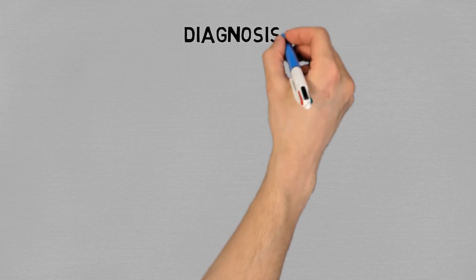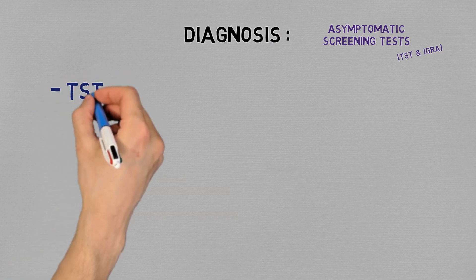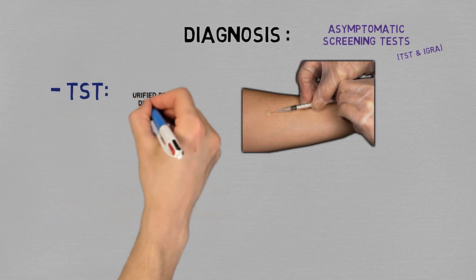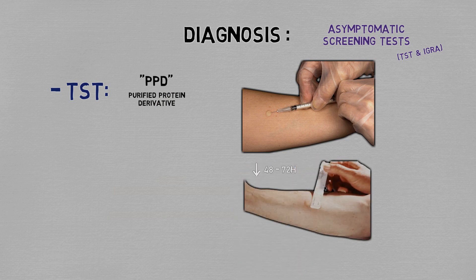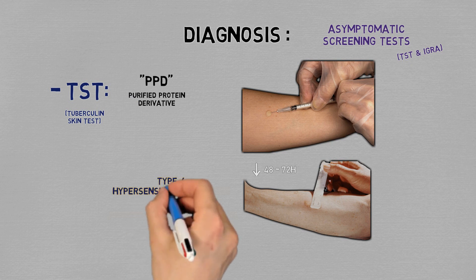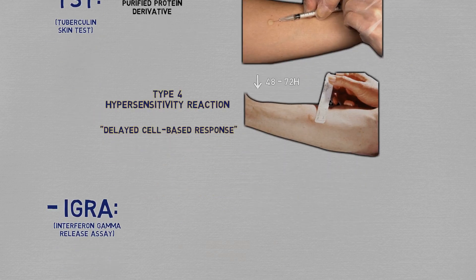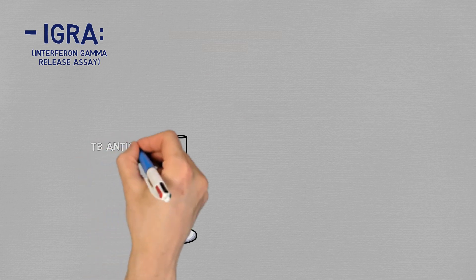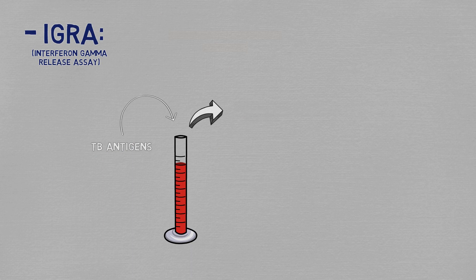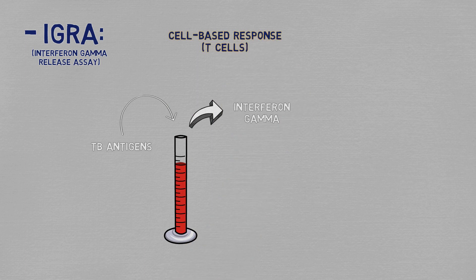It's an asymptomatic condition, so we can only pick it up if you actively screen asymptomatic people. The TST is done by injecting a protein derivative of TB in the skin, and then measuring the size of the induration formed 48 to 72 hours later. This will indicate the strength of the immune response to the antigen. You may remember this as one of the examples of a type 4 hypersensitivity reaction, also known as a delayed cell-based response. And the IGRA is a blood test that consists of exposing the subject's blood to some specific TB antigens, and seeing how much interferon gamma was released by the T cells after that. This is also a measure of a cell-based response by our T cells, rather than a humoral antibody response by our B cells.